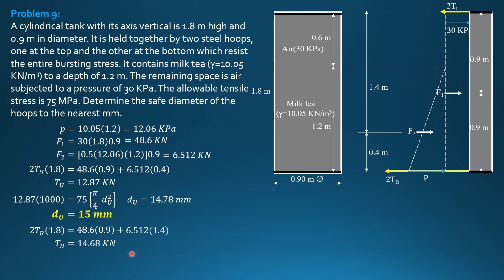Then times 1000 equate to 75 pi over 4 times diameter of the bottom hoop squared. So we get diameter in the bottom hoop 15.79 millimeters. So we use 16 millimeter diameter for the bottom hoop.